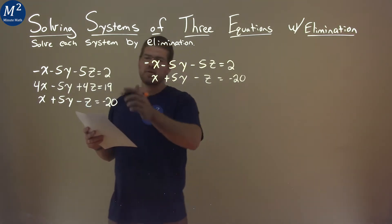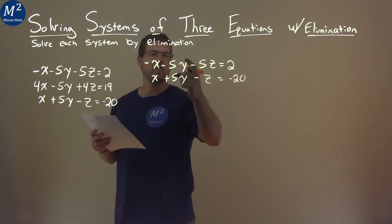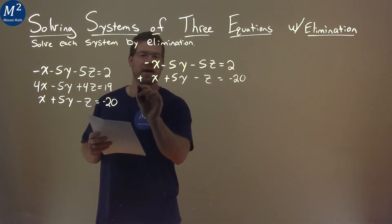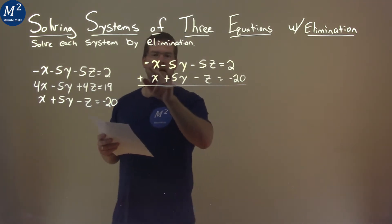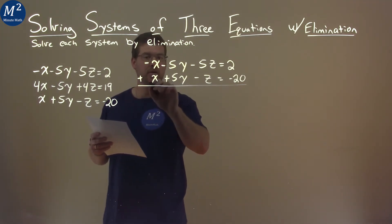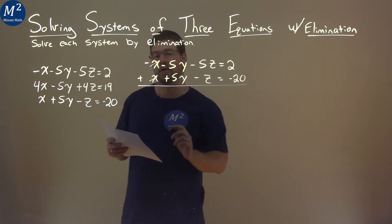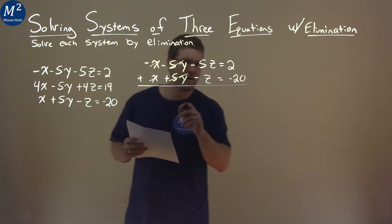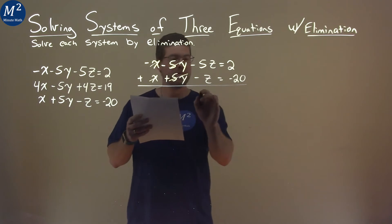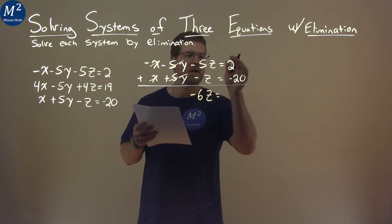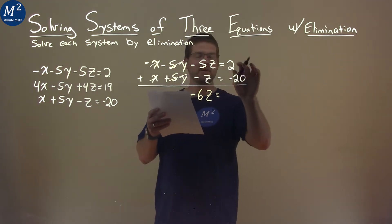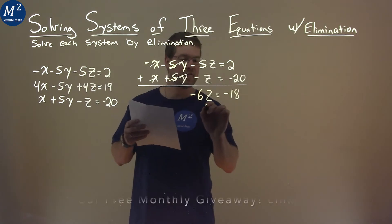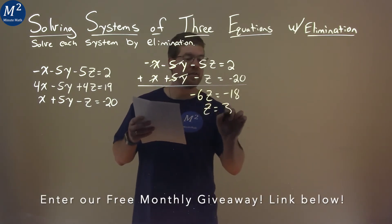And so I pick those equations because I notice if I add them together, our 5y's will cancel, the variable y, as well as the x's. So I'm going to add it here, and let's go down. Negative x plus x becomes 0, they cancel each other out. Negative 5y plus 5y cancel each other out. Off to a good start. Negative 5z plus negative z is negative 6z. And then negative 20 plus 2 is negative 18. We divide both sides by negative 6, and z equals a positive 3.